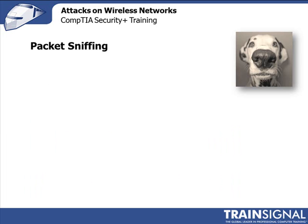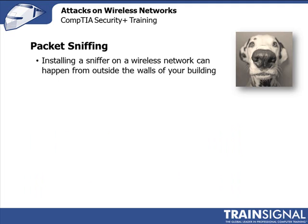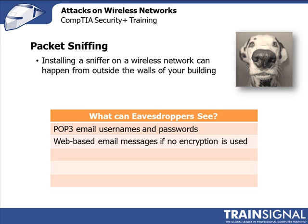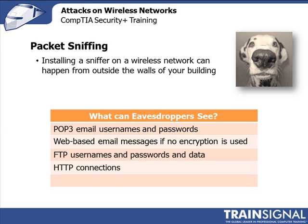Wireless networks are vulnerable to packet sniffing just like wired ones. But in a wired network, in order to use a sniffing program, the packet sniffer needs to be running on a computer that is inside the corporate network, like one that the attacker has physical access to, or one that's been compromised with a Trojan or other malware. But this is a whole lot easier if you have an open or weakly encrypted wireless network. POP3 does authentication for email service — usernames and passwords — in clear text. Web-based email providers can be sniffed if no SSL or TLS encryption is used. And FTP does no encryption. Sniffers can also see exactly what websites you are visiting with HTTP, and they can see your unencrypted IM chats as well. And I don't even need to put Telnet on this list, do I?